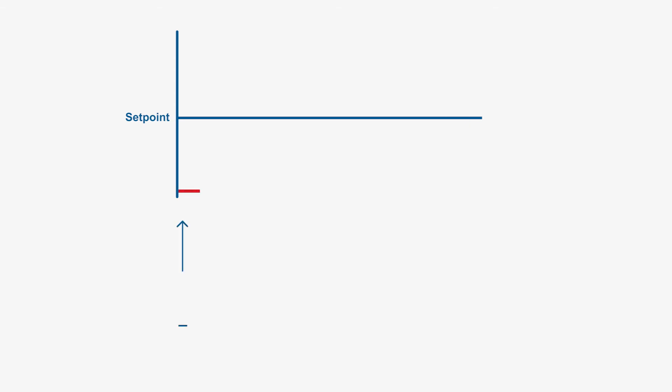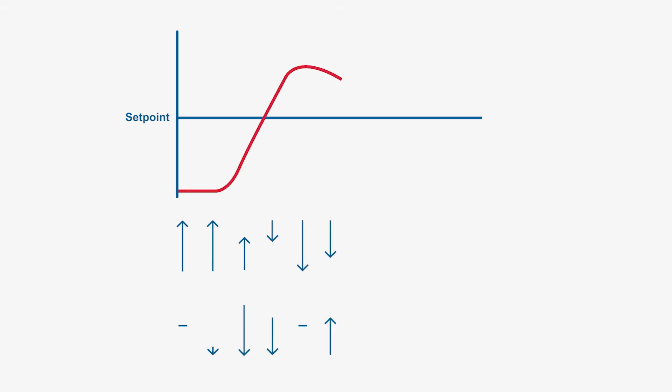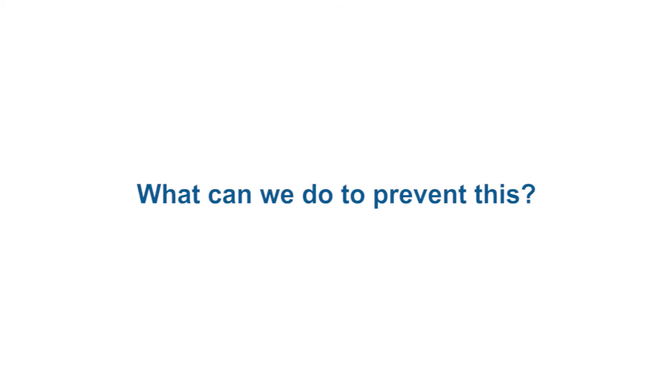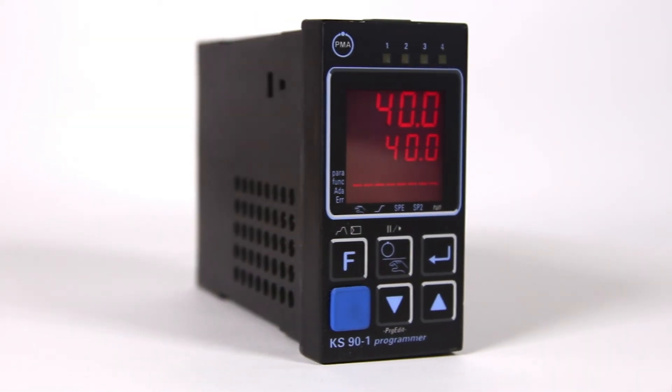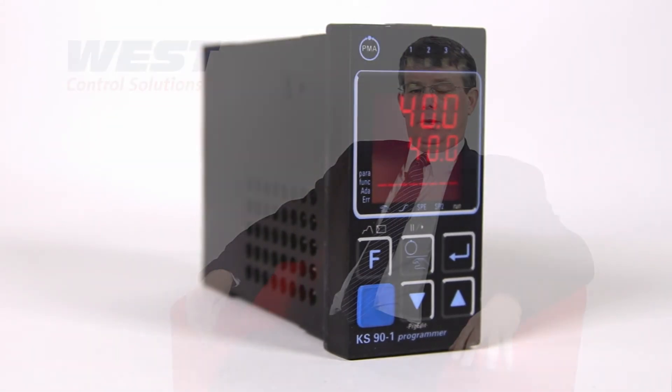This is where we need derivative action. Derivative works on the rate of change in the process, either reducing or increasing the power if the process is rising or falling rapidly. Derivative action is not affected by where the process is or by the control deviation — it is only affected by the movement of the process and its rate of change over time. Derivative action can be combined with proportional control to create a PD controller, or combined with integral as well to create a PID controller.